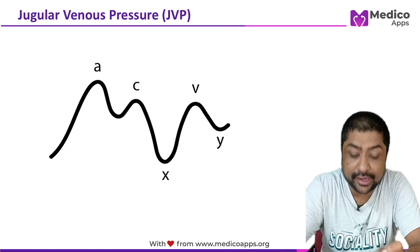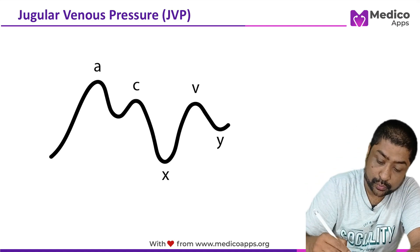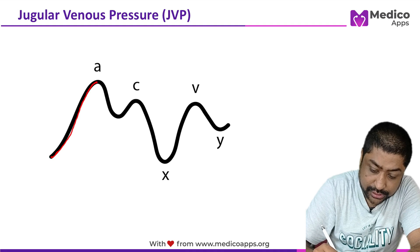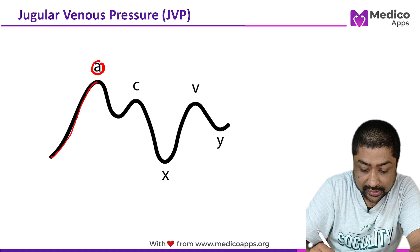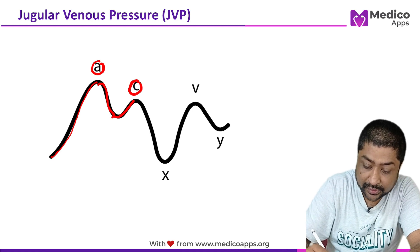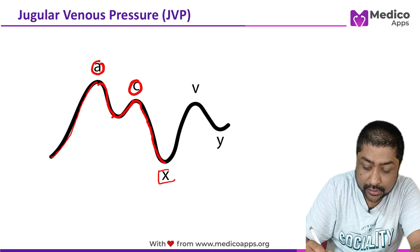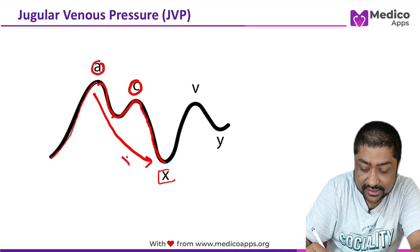Let's look at what kind of graph we get when we measure jugular venous pressure. There is an ascent which leads to a peak formation called the A wave or A peak, then it starts falling down. At some point another peak is formed — that is the C peak — then it falls down again till it reaches a bottom, and this descent is called the X descent.